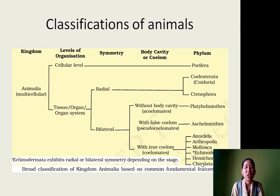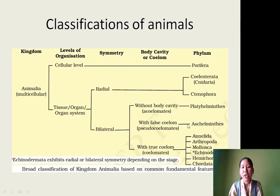This is the broad classification of animals based on common fundamental features. Even though animals are diverse, they are categorized into groups based on common features like level of organization, body symmetry, and body cavity. The phyla include Porifera, Cnidaria, Ctenophora, Platyhelminthes, Aschelminthes, Annelida, Arthropoda, Mollusca, Echinodermata, Hemichordata, and Chordata, which we are going to study in detail one by one.